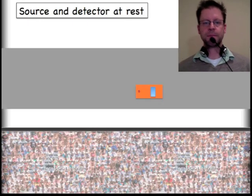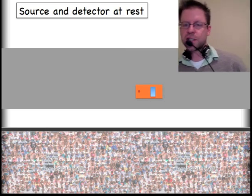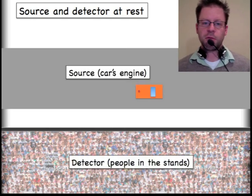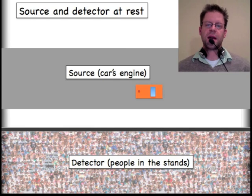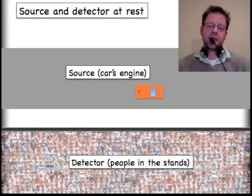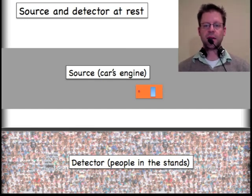Let's see how that works. Zooming in on my orange car here, I'm going to start with a scenario where the car is going to be at rest. The source of the sound is going to be the car's engine, and then the detector is going to be some individual out in the audience here that I'm showing down at the south end of the slide.